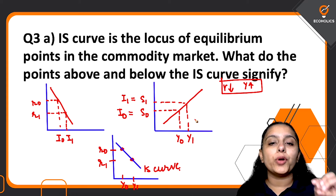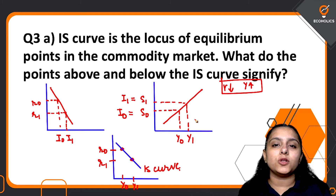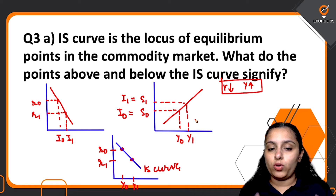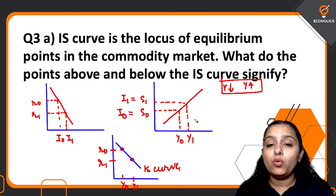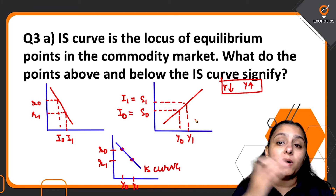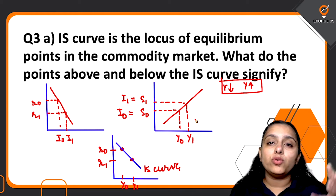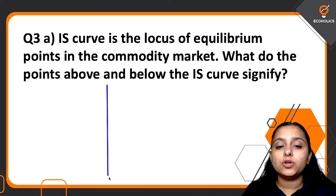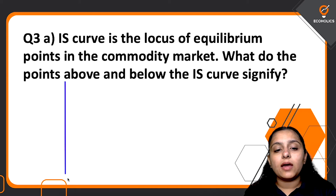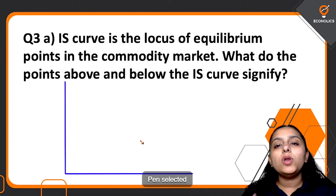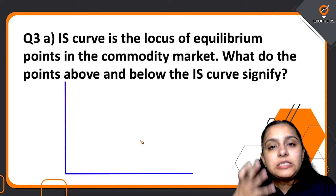You talk about this derivation briefly, keeping in mind that the question is about points above and below the IS curve, so keep yourself concise. But it's a good strategy because you've shown how the IS curve is derived — and since savings and investment come into the picture, when you talk about points above and below IS, you know they relate to either investment or savings. Diagrams here are non-negotiable.